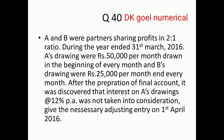A and B were partners sharing profits in 2 is to 1 ratio. During the year ended 31st March 2016, A's drawing were rupees 50,000 per month drawn in the beginning of every month, and B's drawing were rupees 25,000 per month at the end of every month.